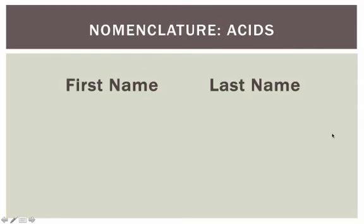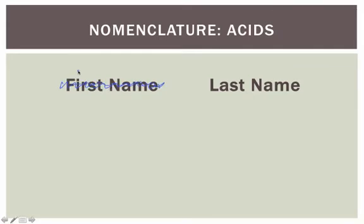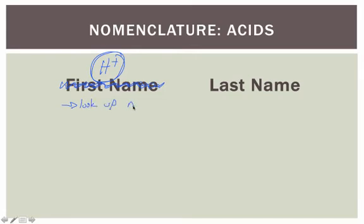Let's now talk about some of the naming rules themselves. Just like before, we'll use a first name, last name kind of scenario. But unlike before, acids actually don't have a first name associated with them. An acid always has H-plus as its positive ion, so the name does not require us to include that — by naming it as an acid, we'll automatically know it has an H-plus. Therefore, all the rules we're dealing with today concern just what's going on with the last name. When dealing with that last name, you've got to look up the name of your negative ion.